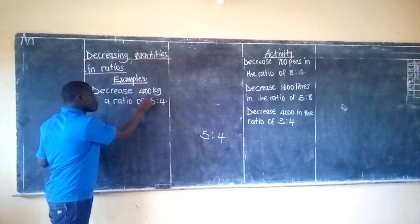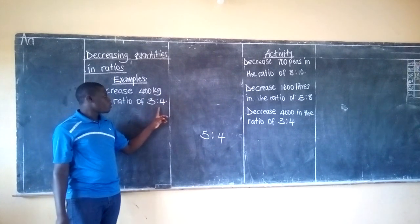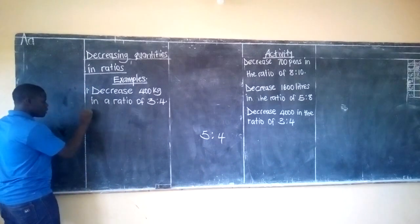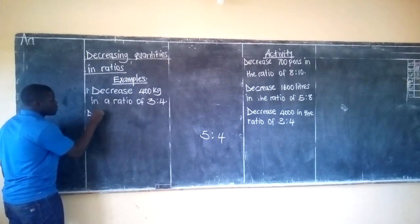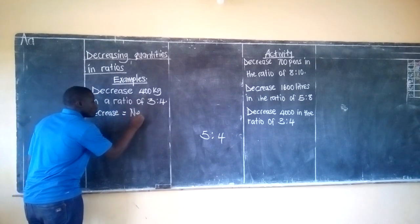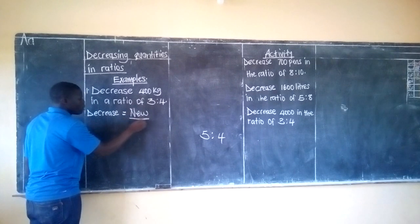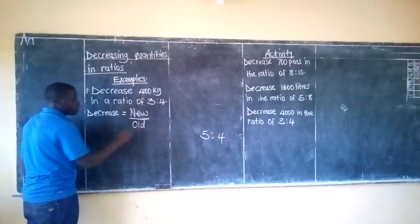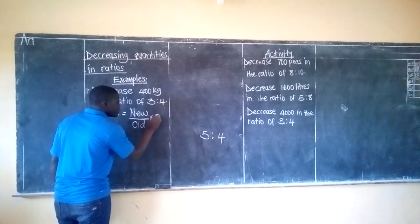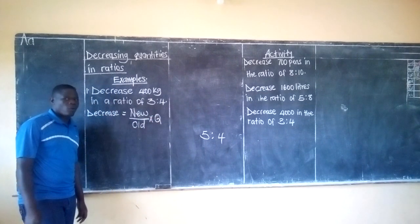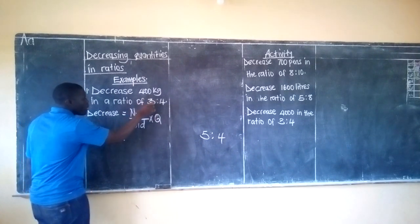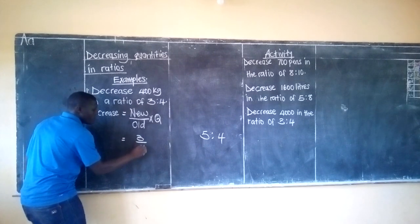Here with decrease, the first part of the ratio will be smaller than the second part. Decrease is equal to the new part of the ratio out of the old ratio, then we multiply this by the quantity. So our new part is 3 out of 4.